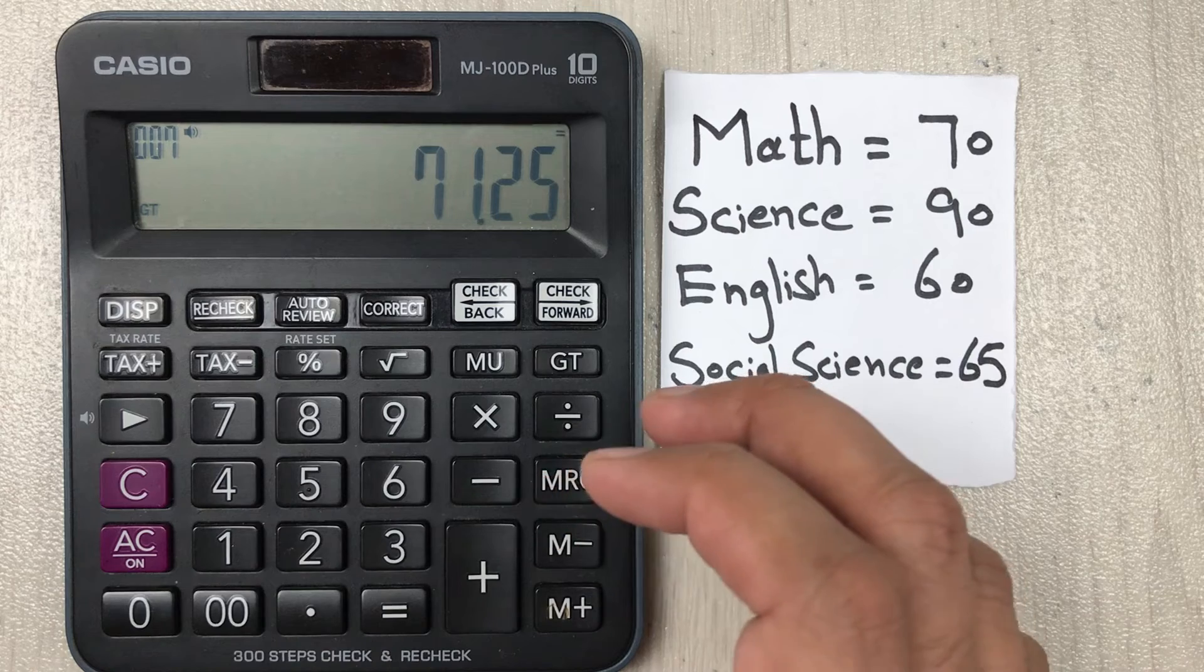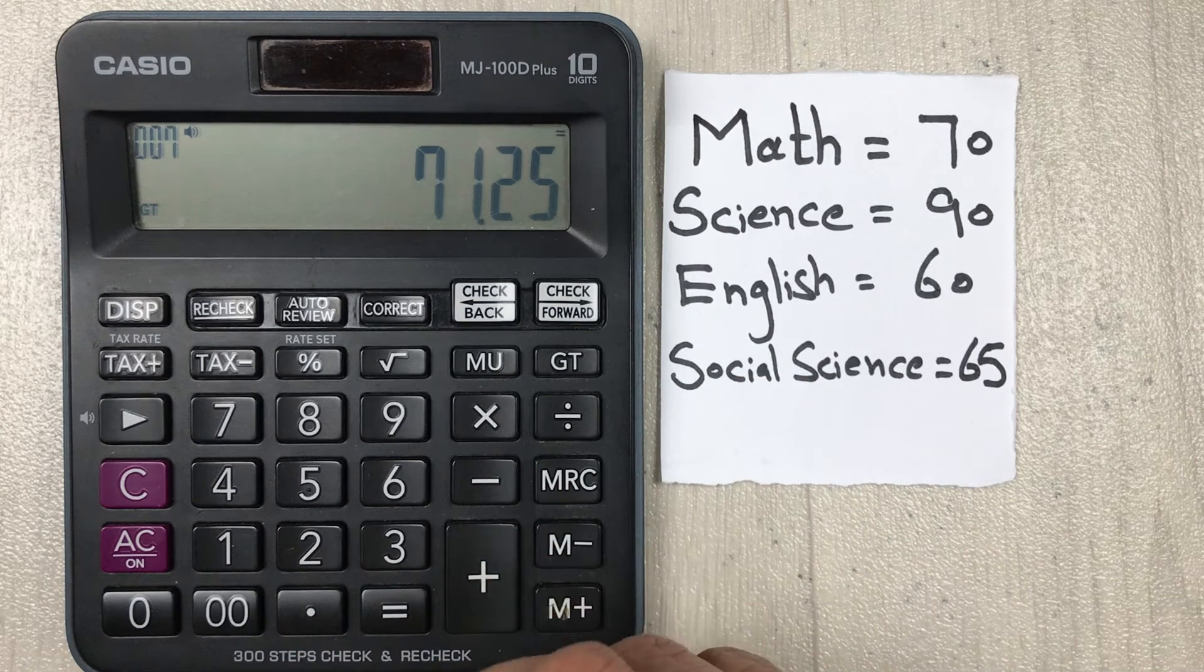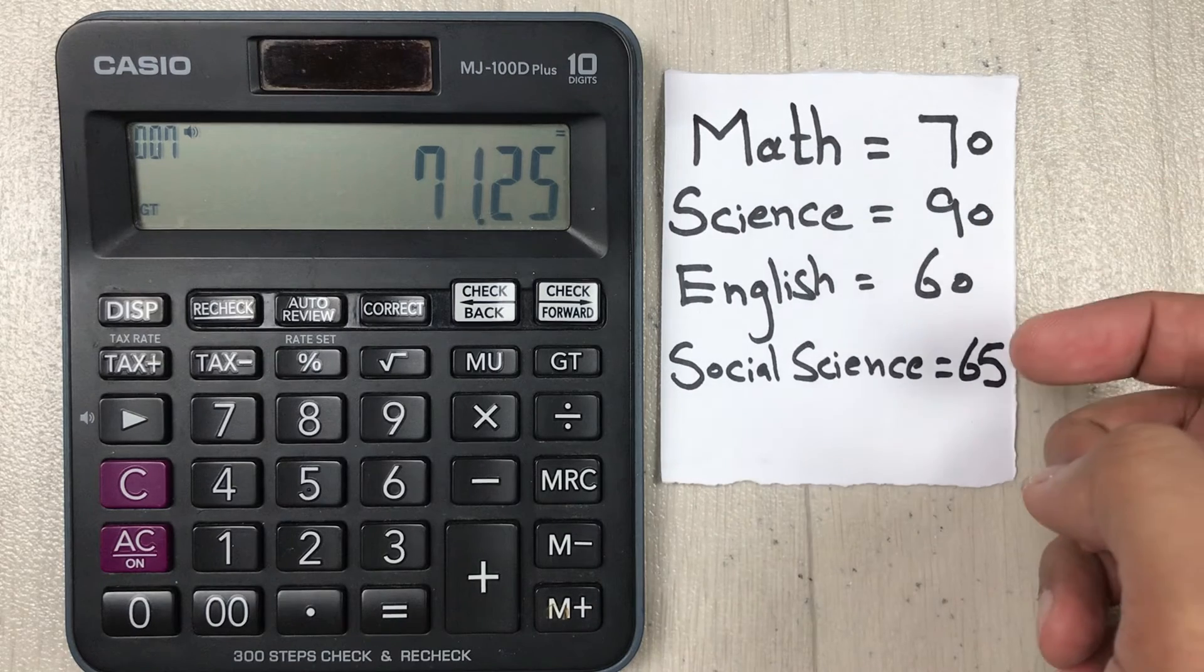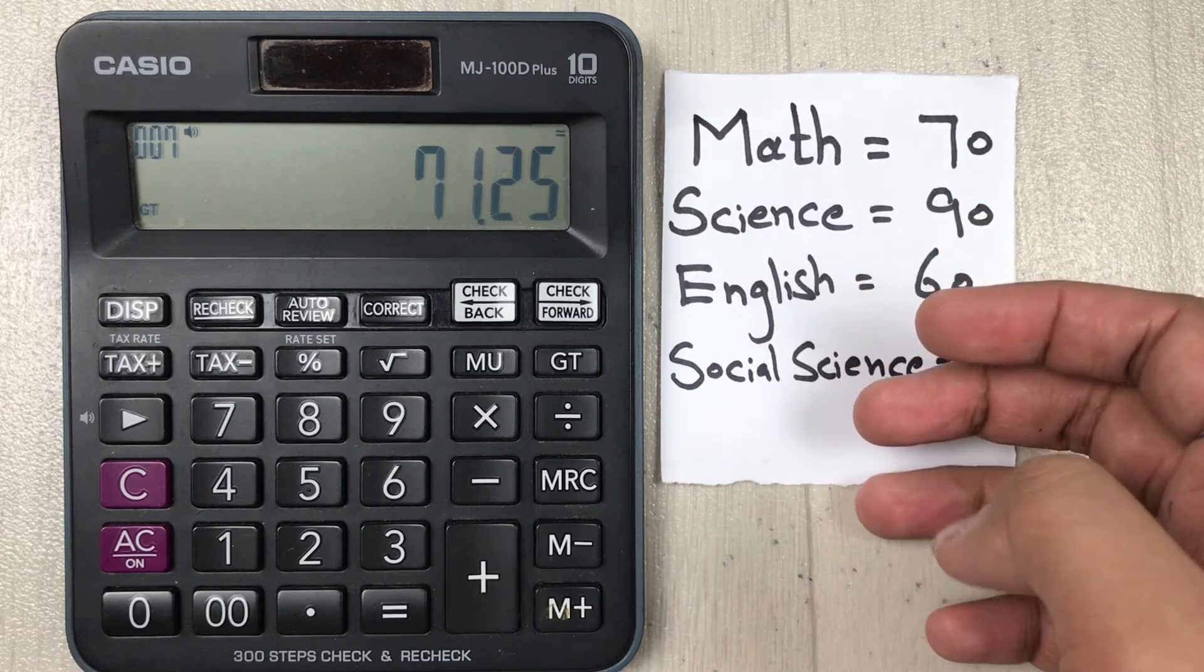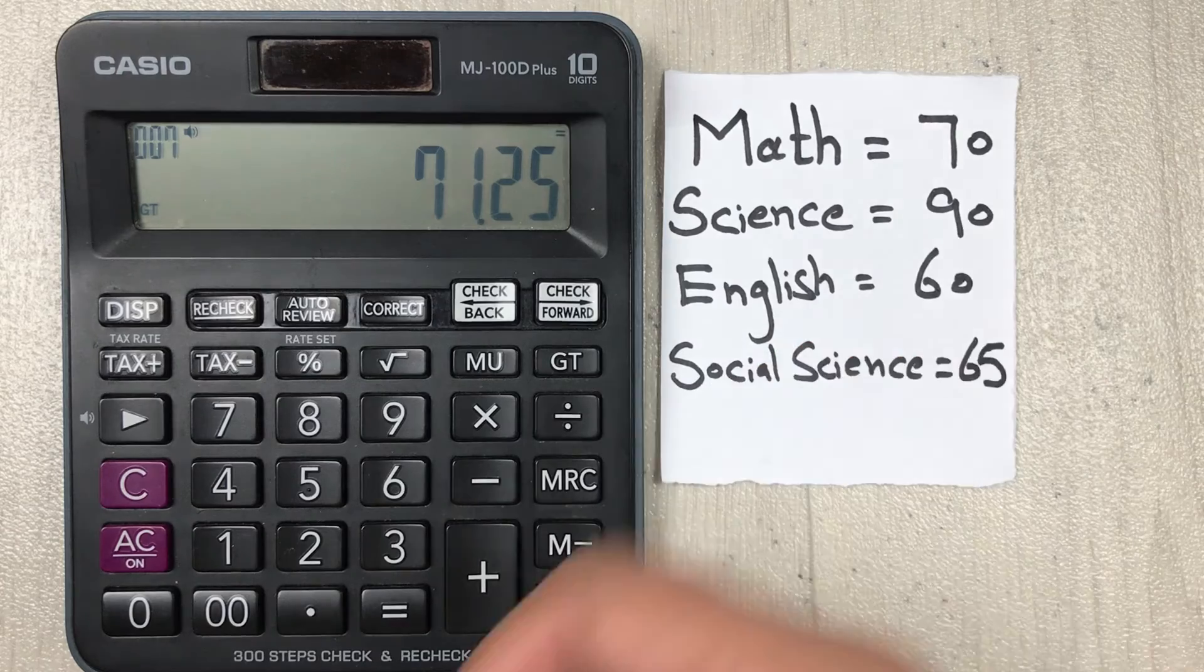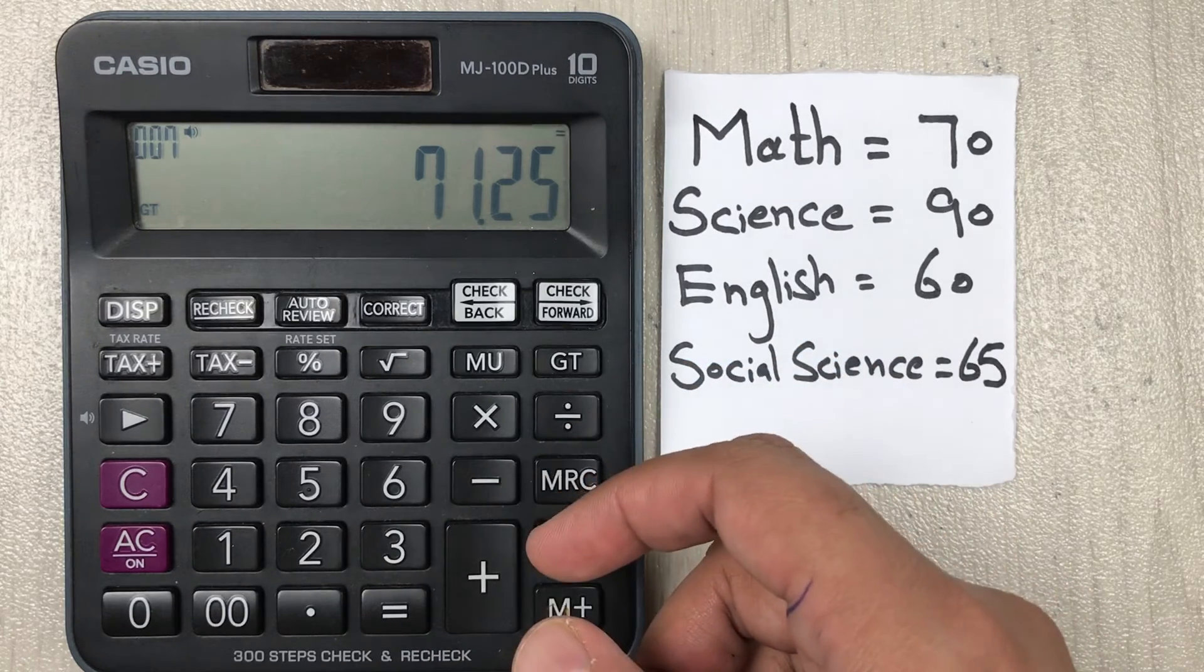So guys, this is how you can calculate the class average marks on your simple calculator. First you have to add the marks, the total marks, and then you have to count your subjects, how many subjects you have, and then divide the answer with the count. This is how you can calculate the average marks on your simple calculator.